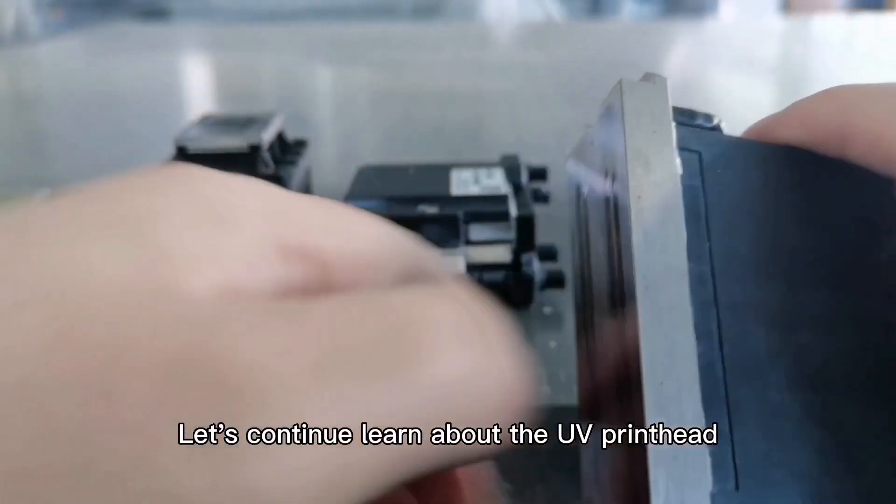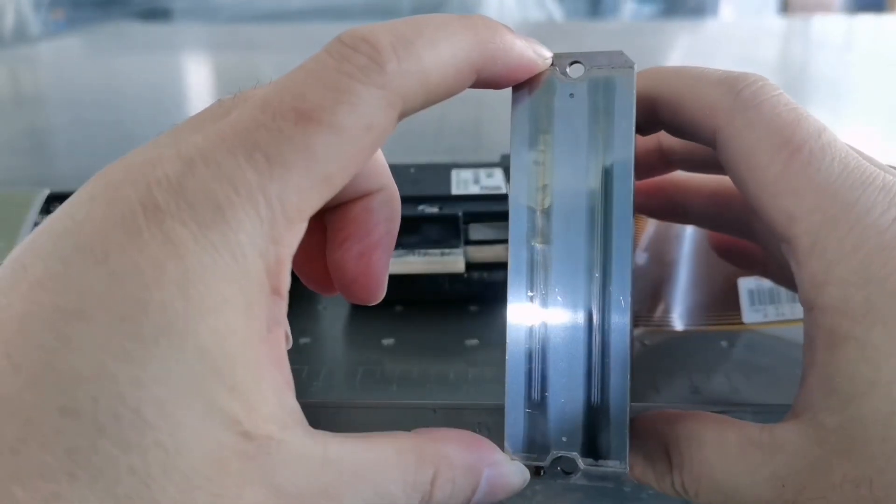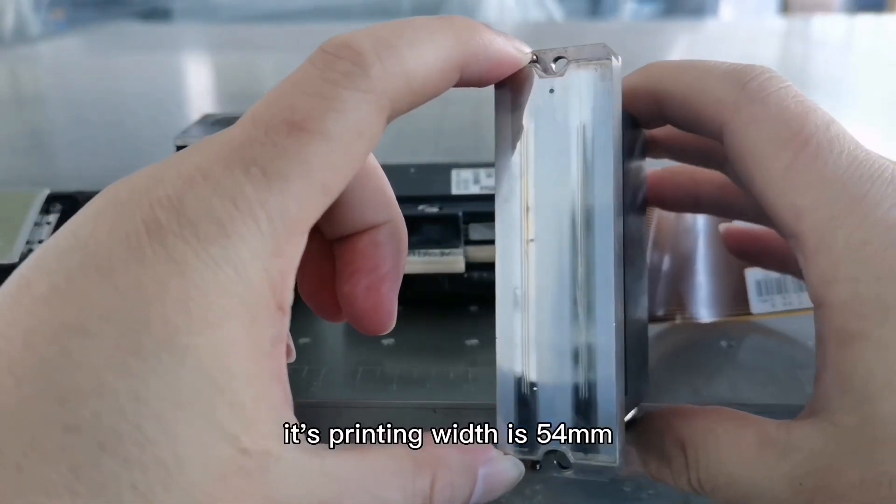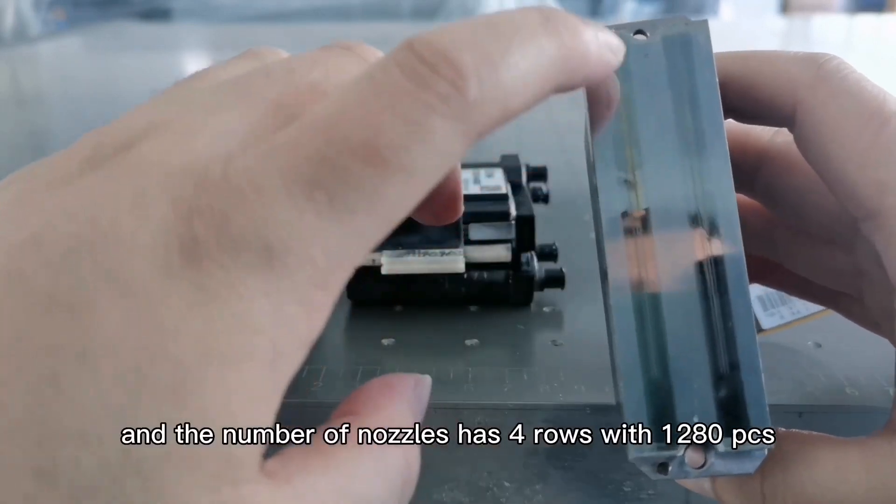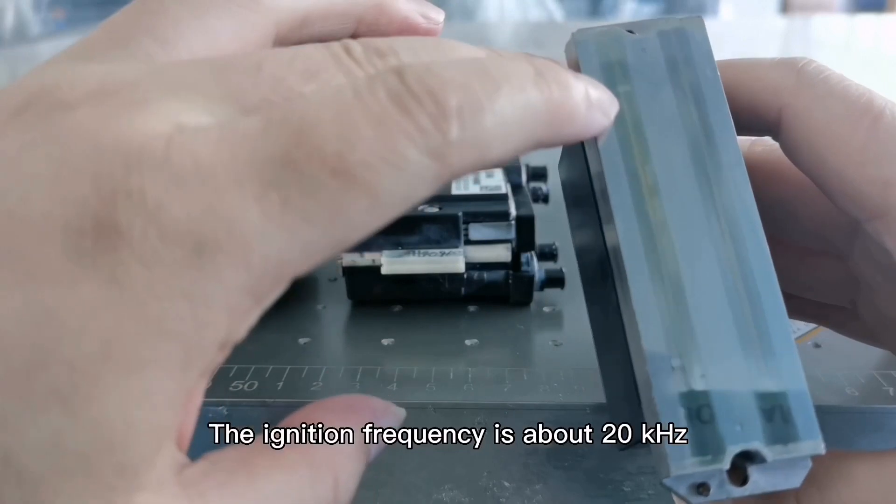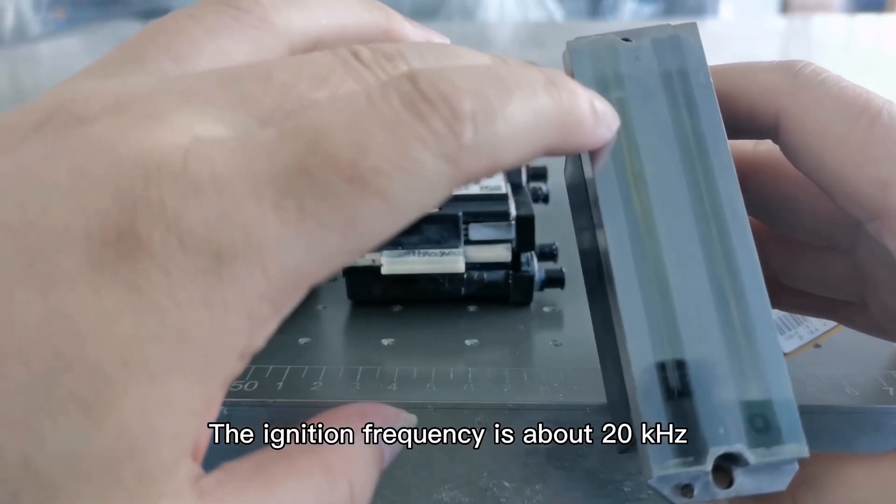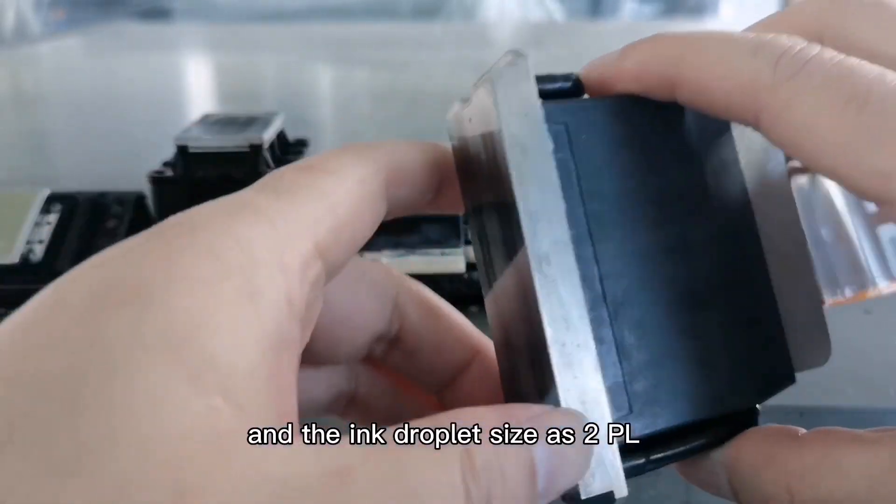Let us continue to learn about the UV printhead. This is Ricoh G5 printhead. Its printing width is 54 millimeters and the number of nozzles has four rows with 1280 nozzles. The ignition frequency is about 20 kilohertz and the ink droplet size is 2 picoliters.